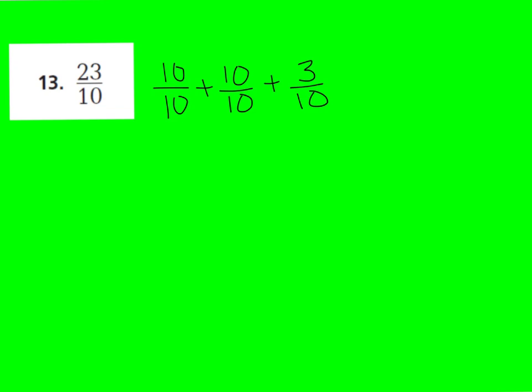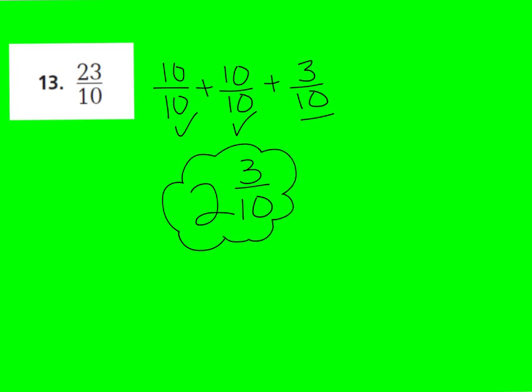Let's look at number 13. I want you to try this one on your own, and then we'll check our work. Go ahead and press pause. Here's what I have: I turned it into an addition problem by pulling out the wholes, and I need to get to 23 tenths. I pulled out 10 tenths — my whole — plus another 10 tenths, which gives me 20 so far, plus 3 tenths gives me 23 tenths. So I have 1, 2 wholes and 3 tenths left over. Boys and girls, you should have 2 wholes and 3 tenths. Go ahead and give yourselves a star next to your answer for number 13.